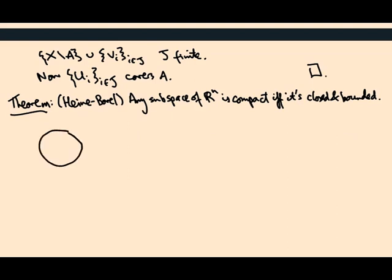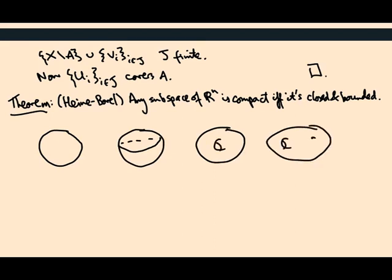The torus is compact, it's a closed and bounded set. The torus, higher genus surfaces, they're all compact.